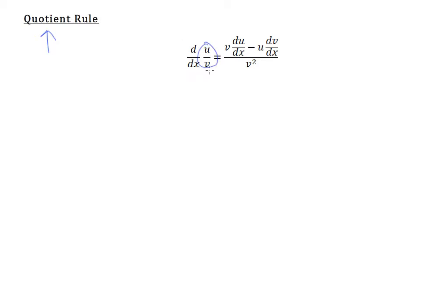Something that looks a bit like this. The quotient rule is essentially the product rule. Some people may not want to learn the quotient rule and do it as a product rule instead, but it's something pretty useful because it can help you differentiate a complicated-looking fraction like this in a very quick manner.